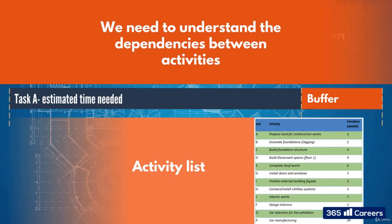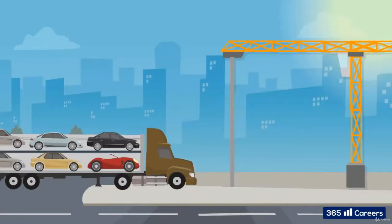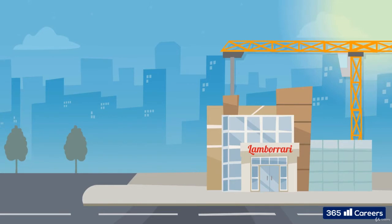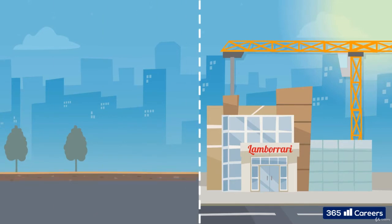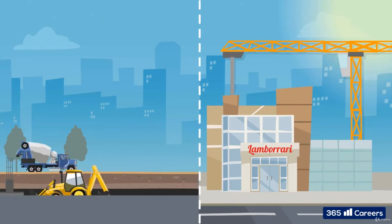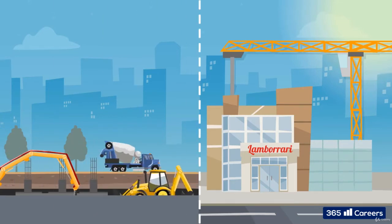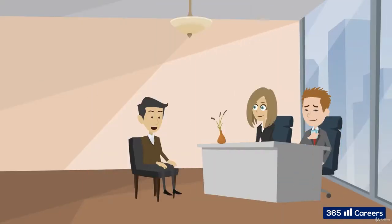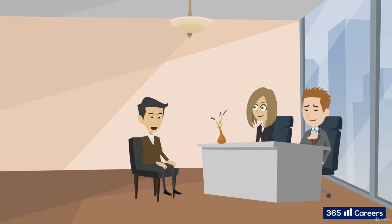It's not hard to imagine how some tasks are dependent on others. You can't have the cars delivered without a showroom, and you can't build your showroom until you've started digging, and you can't start digging until you have the machinery on site. You can, however, start recruiting the sales team. So let's look at the four main reasons why dependencies exist between tasks.